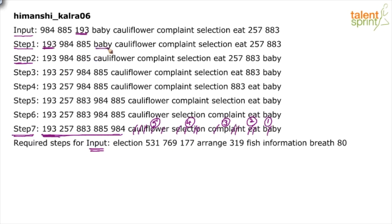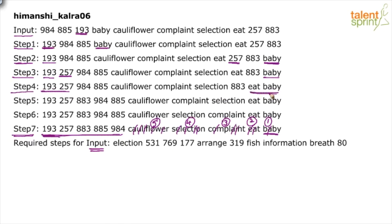In step two, the word baby — which was in fourth position — has been brought to the last position, and everything else remains as it is. So the pattern is alternating: in one step we fix a number, in the next step we fix a word. Baby was brought to the last position because that is the desired output. In step three, we fix the next number: 257 is brought to the second position.